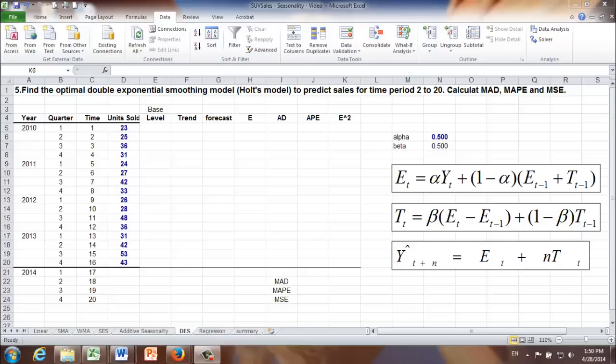Question 5. Find the optimal double exponential smoothing model to predict sales for time period 2 to 20. Calculate MAD, MAPE, and MSE.